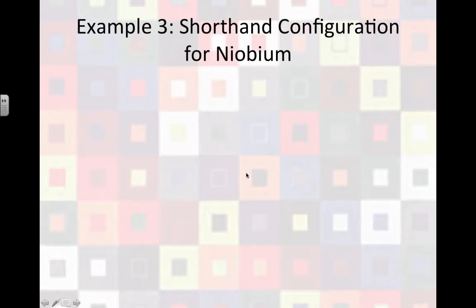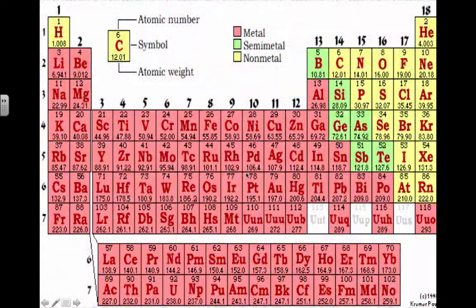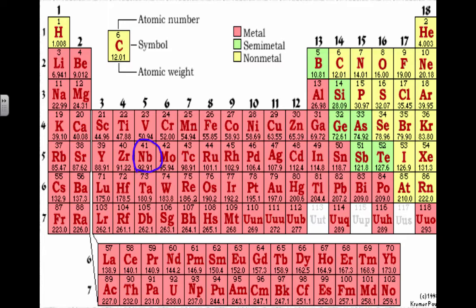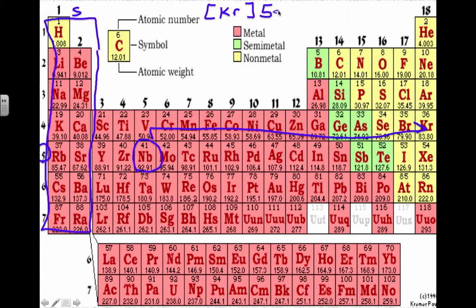Let me show you how this works. Let's write a shorthand configuration for niobium. So first, I need to find niobium on the periodic table. It's element number 41. And we'll go to the row above niobium. So up here, slide all the way across to the right and find your noble gas. So I have krypton there. Let's put krypton in square brackets. Then we can start our configuration at row five. In row five, the first section is the S section. So I fill in two electrons in 5s, one for rubidium and one for strontium.